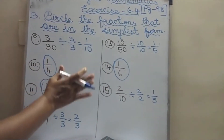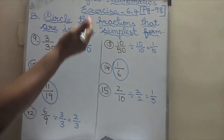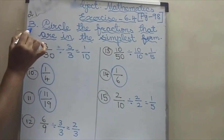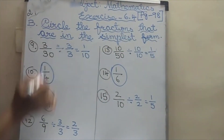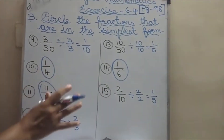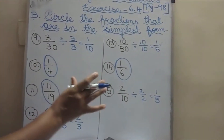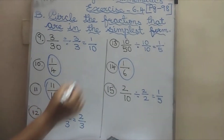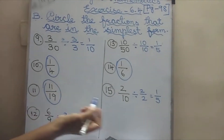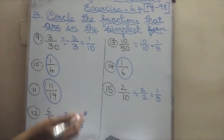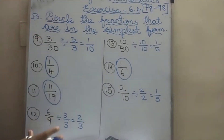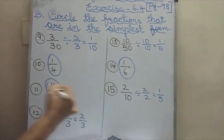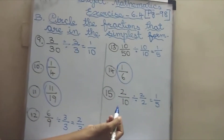This one you have to copy down in the notebook. Exercise 6.4, page number 98 — write B and start writing like this. Write neatly. Leave some lines and write neatly. Some of them are simply scribbling. You can divide the notebook into 2 and write like this.